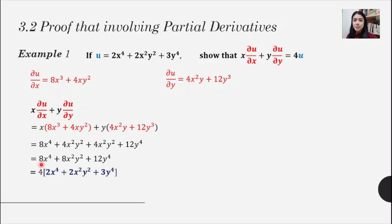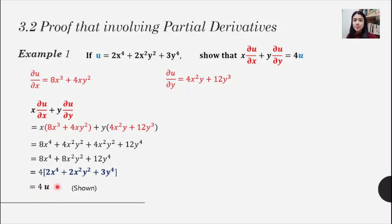Factoring out 4 from the expression gives us 4 times the quantity (2x to the power 4 + 2x squared y squared + 3y to the power 4). This bracketed expression is exactly our original function u. Substituting back, we get 4u, which is exactly what we were asked to show. This completes the proof for Example 1.